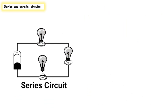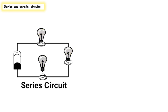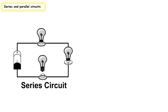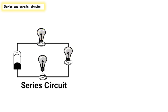A circuit that has only one path for the current to follow is a series circuit. The electric current will leave the battery, move to the first bulb, second bulb, third bulb, and back to the battery. If all three bulbs are intact, they will all glow. If one of these bulbs is missing or damaged, the flow of charges will stop and the whole circuit will fail. If we remove one of these bulbs, the circuit will be open and the whole flow of electricity will stop.